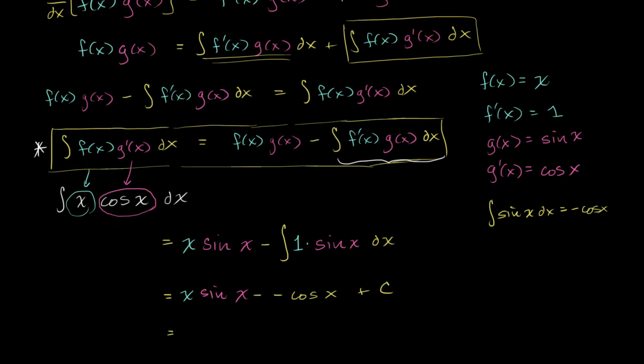And so this is all going to be equal to, we get our drum roll now, it's going to be x times sine of x, subtract a negative, that becomes a positive, plus cosine of x, plus c. And we are done. We were able to take the antiderivative of something that we didn't know how to take the antiderivative of before. And that was pretty interesting.